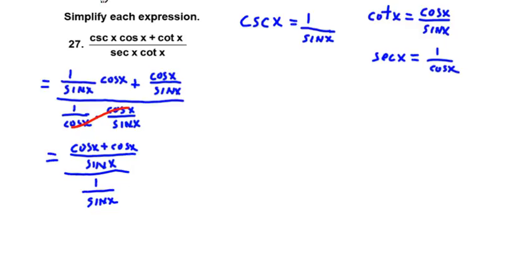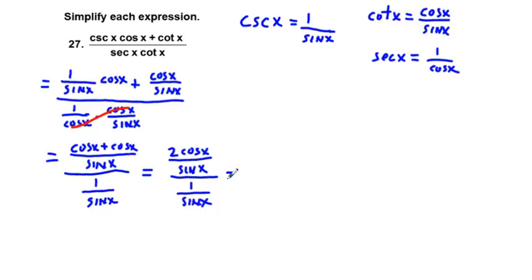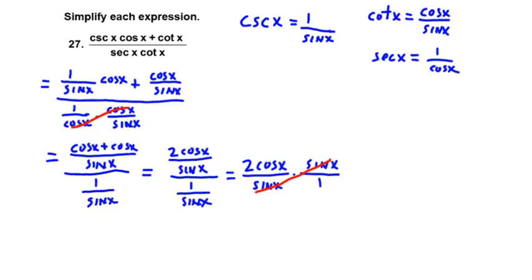To simplify, cosine x plus cosine x in the numerator becomes 2 cosine x over sine x. We're dividing by 1 over sine x, which is the same as multiplying by sine x over 1. The sine x terms cancel, and we are left with our most simplified answer: 2 cosine x.